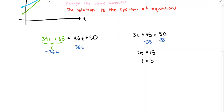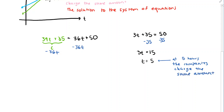This means that at 5 hours of service, the companies charge the same amount. Normally when solving a system of equations we'd find both variables, but this problem only asks how many hours until costs are equal. We've answered that question, so this is a fine stopping point.